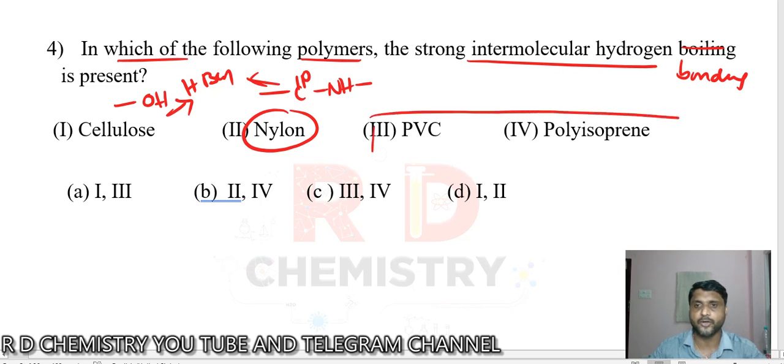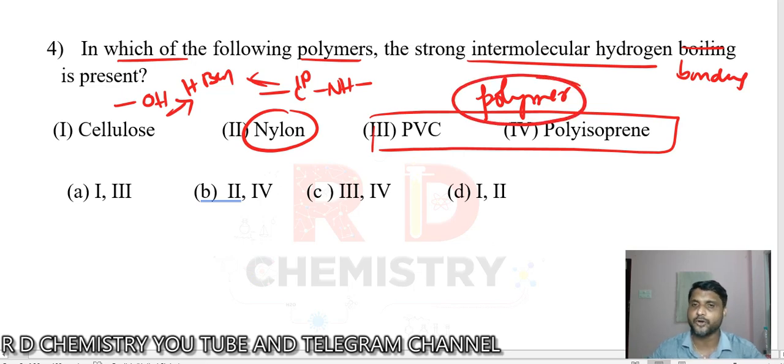Nylon is a polyamide, so there can be the strongest intermolecular bonding like hydrogen bonding possible between the two polymeric chains. PVC, polyvinyl chloride, and polyisoprene are polymers that are very stretchable, so there are weak van der Waals forces of attraction. Therefore, cellulose and nylon should be the answer. Option number D is the answer.